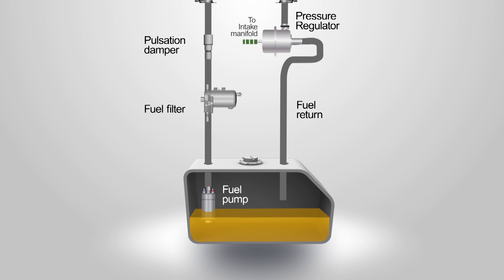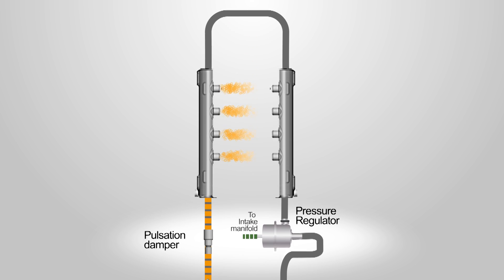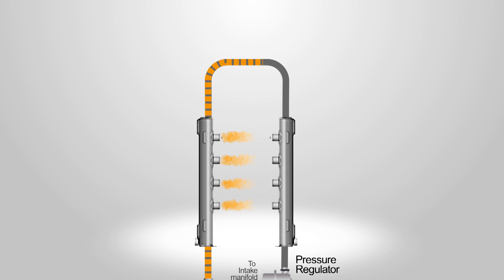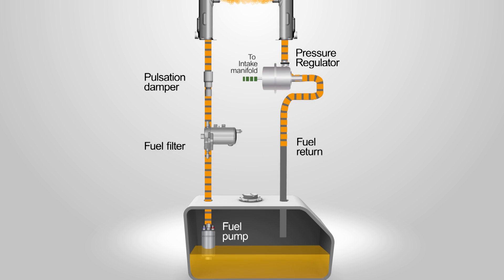Older EFI vehicles use a fuel return type system, with filtered fuel delivered to the rail and injectors, and then return to the fuel tank after passing through a fuel pressure regulator.